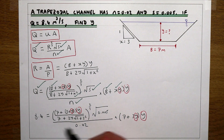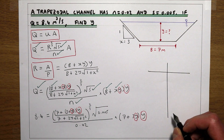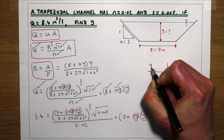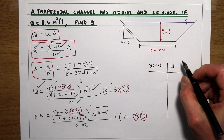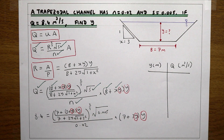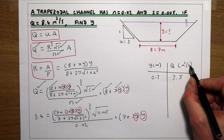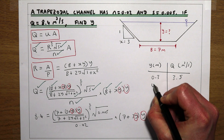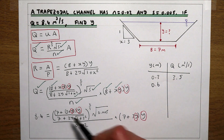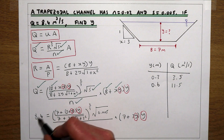Unfortunately, this equation is very difficult to rearrange for Y. So we solve it through trial and error — entering values of Y and seeing what discharge results, then adjusting until Q equals 8.4. Starting with Y = 0.3 m gives Q = 3.5 m³/s, which is too small. Increasing to Y = 0.6 m gives Q = 11.5 m³/s, which is too large.